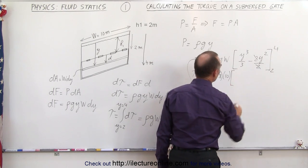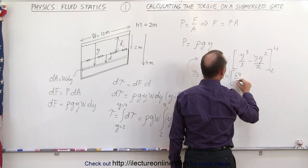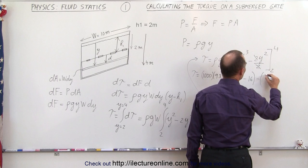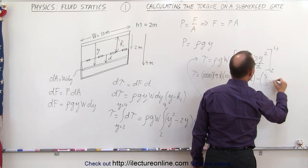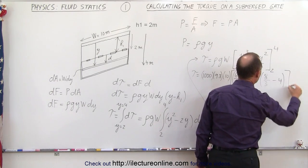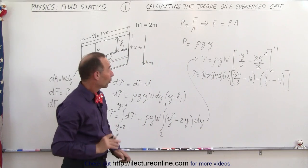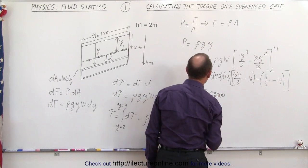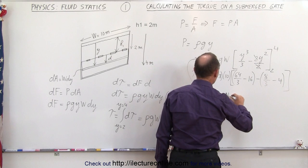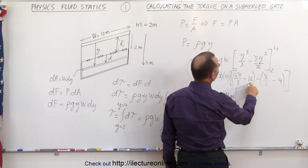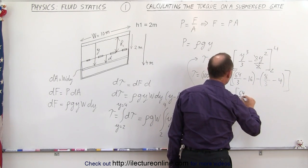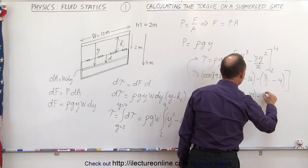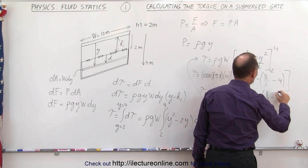Plugging in: density of water is 1,000 kg/m³, g is 9.8, and W is 10 meters. At the upper limit Y equals 4: 4 cubed is 64, so 64 over 3, minus 4 squared which is 16 — put over a common denominator to get 64 over 3 minus 48 over 3. At the lower limit Y equals 2: 2 cubed is 8, so 8 over 3, minus 2 squared which is 4, giving 8 over 3 minus 12 over 3.